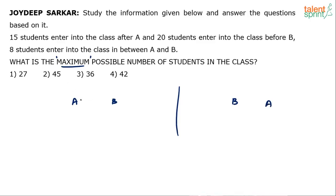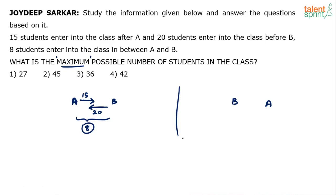Let's go by the sequence. After A, 15 people entered the class. Before B came in, 20 students had already entered. And between A and B, there were only 8 students.